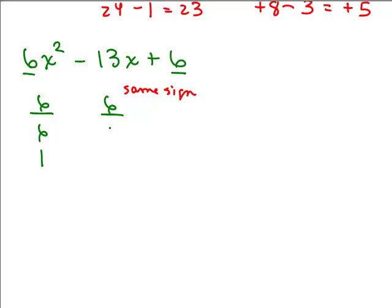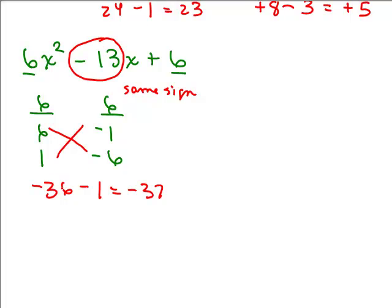For 6, I can't put the 6 next to the 6, but I could try 1 and 6 — and we want the same sign, both negative. Let's crisscross it: 6 times negative 6 is negative 36, and 1 times negative 1 is minus 1, that's negative 37, but I want to get negative 13. So that didn't work. Let's keep the 6 and 1 again and try different factors of 6 — how about 2 and 3? Can you put a 2 or a 3 next to the 6? No. So 2 and 3 is not going to work in either place.